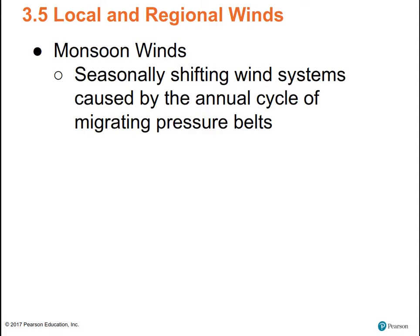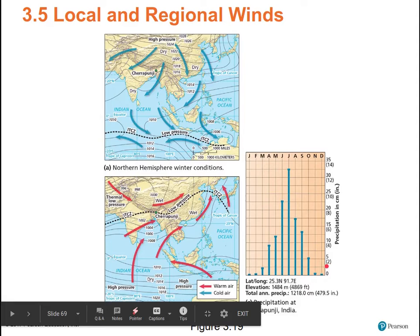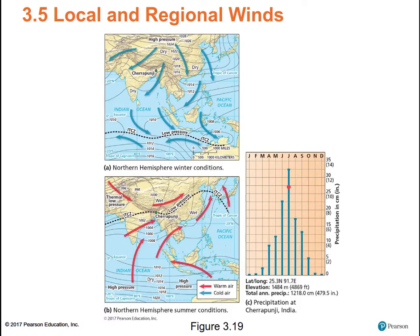Monsoonal winds are caused by the shifting ITCZ, land-water heating differences, and the shifting of the sub-solar point. Winter conditions: low pressure offshore, high pressure with dry warm winds blowing out — the drought period. In the summertime, the ITCZ shifts north, high pressure over the ocean, low pressure inland, and you get extremely rainy conditions. Cherrapunji is one of the wettest places in the world: 89 and a half feet of rain recorded in one year, 30 and a half feet of rain recorded in one month.